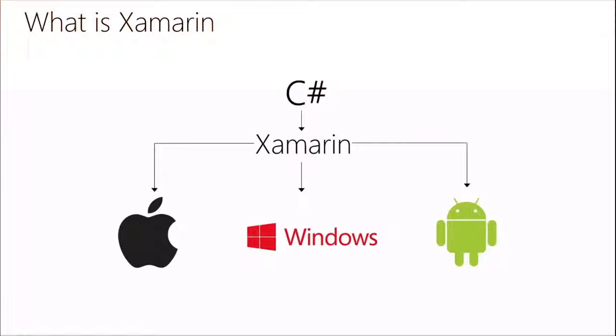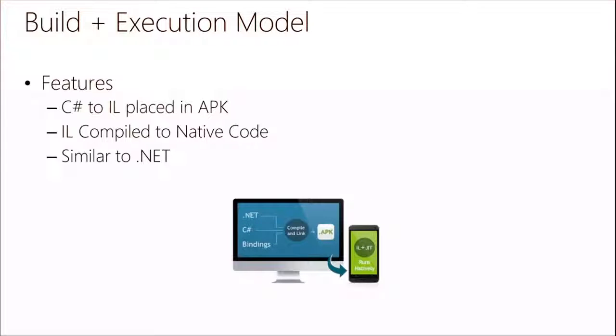Xamarin takes your C# and you're able to compile down to native code on iOS and Android, and use that same C# code on the Windows platform. On the iOS side, you have ahead-of-time compiling — AOT — and it compiles down to native code. On the Android side, it uses JIT compiling, similar to the .NET framework. Your C# is compiled to IL and placed in an APK, and then on the device, the IL is compiled down to native code, so it has its own runtime.